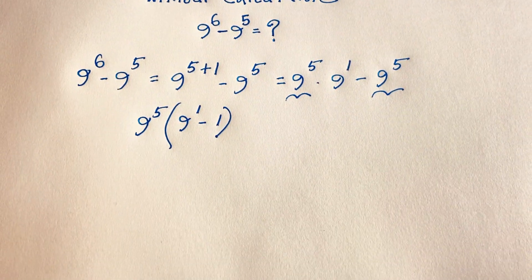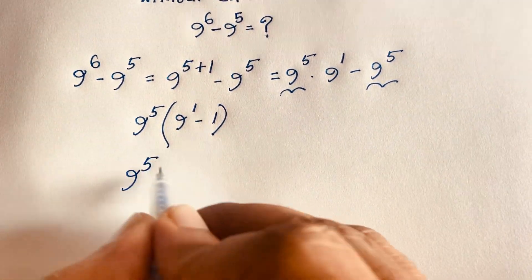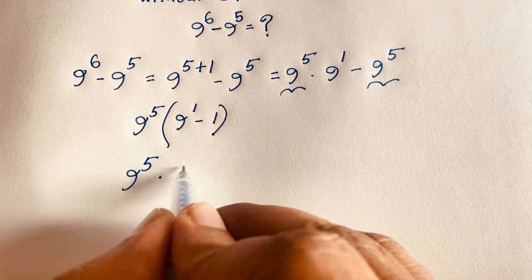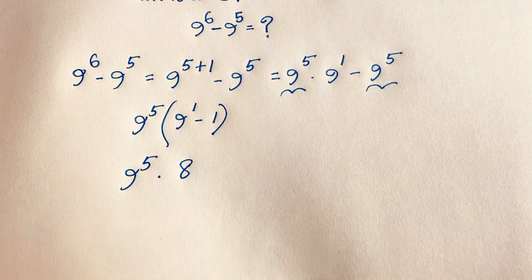Now at this moment you can see here is 9 to the power 5 times (9 minus 1), which equals 9 to the power 5 times 8.